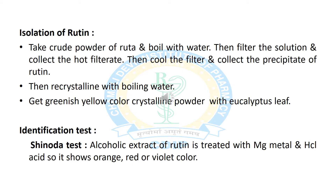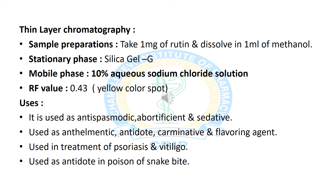Now we will discuss the identification test for rutin, which is the Shinoda test. In this test, we prepare an alcoholic extract of rutin and treat it with magnesium metal as well as hydrochloric acid. It shows an orange-red or violet color.